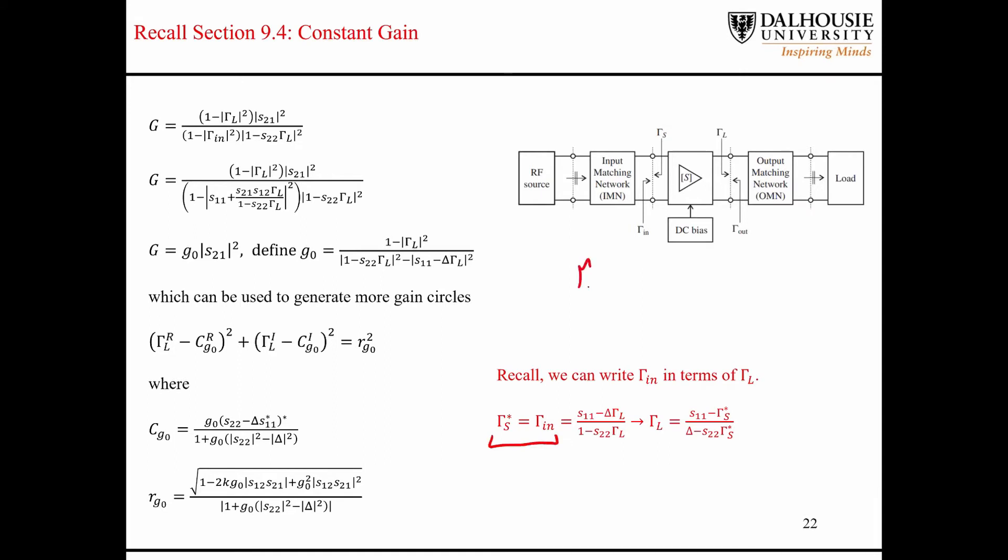From a couple of the previous lectures, we know that gamma in is a function of gamma l. This equation here can be rewritten like this and substituted in place for gamma in. From this, we can solve for gamma l, and we can plug that into our circle equations for the operating power gain.